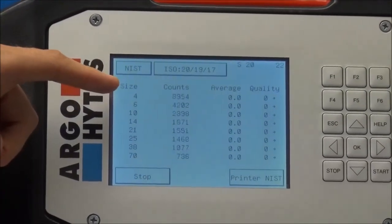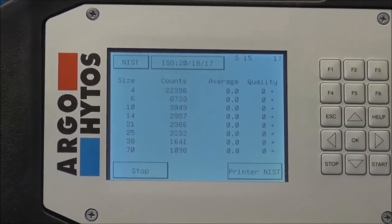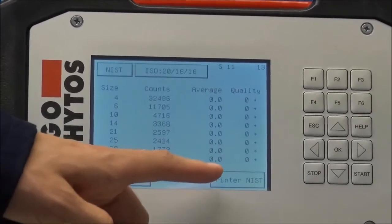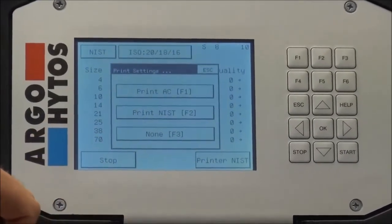After the flushing directly the measurement of the sample volume is starting and you see how the counts in different particle channels are going up. On the right lower side you also see that it is possible to select how the measurement results should be printed out. We choose here to print out the NIST result.